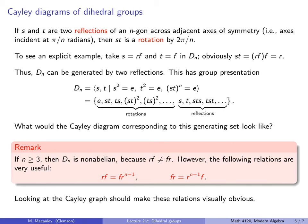If you look at the Cayley graphs, these relations should be visually obvious. The Cayley graphs have an inner loop and an outer loop, where the inner loop goes one direction and the outer loop goes the other direction. So RF — going one time around and then outside — is the same as FR^{-1}, and so forth.